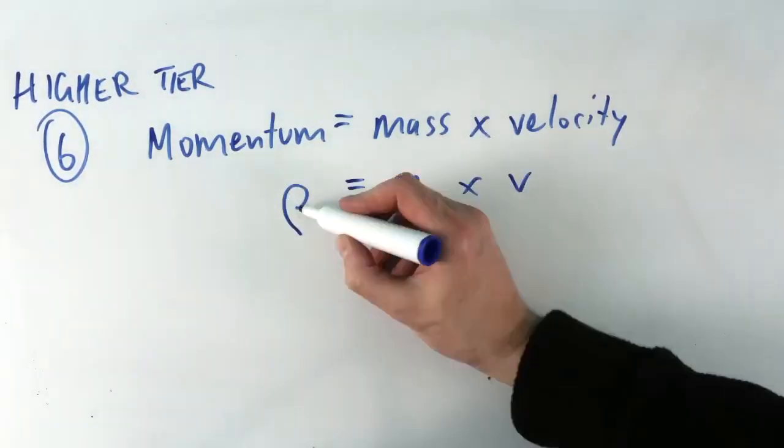Higher tier. Six, momentum equals mass times velocity.